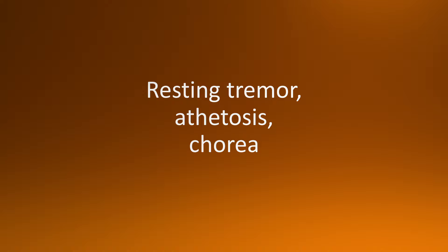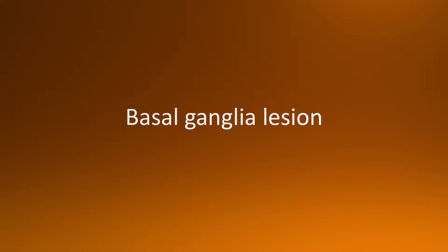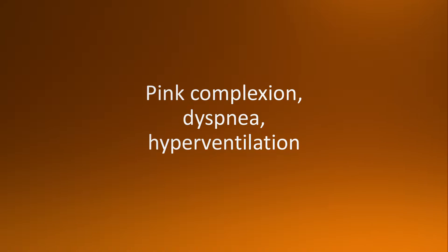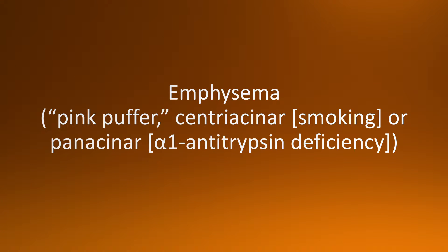Moving on to our next flashcard: pink complexion, dyspnea, and hyperventilation — the answer is emphysema. These patients are also known as pink puffers because they breathe with pursed lips. Most commonly we have centriacinar emphysema and panacinar emphysema. Centriacinar emphysema is most commonly associated with smoking, and panacinar emphysema is associated with alpha-1 antitrypsin deficiency, which is a congenital cause.